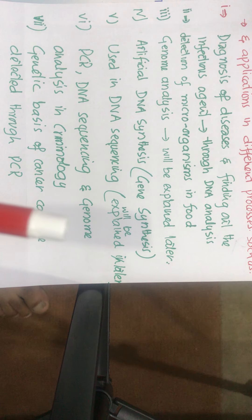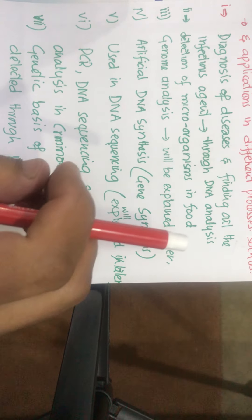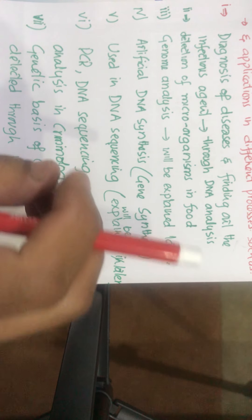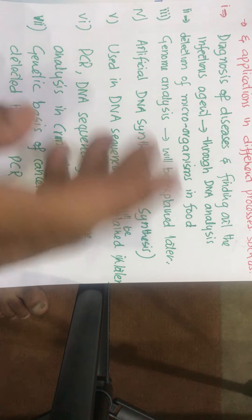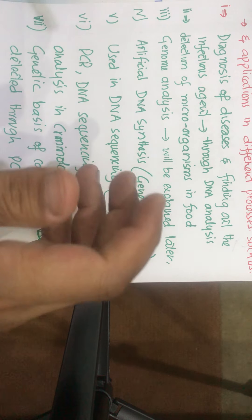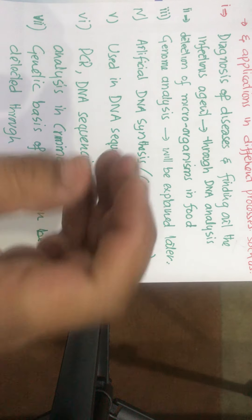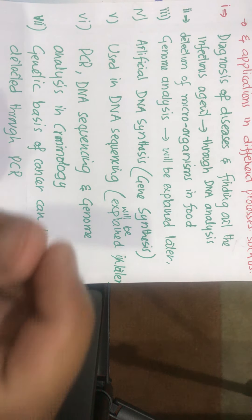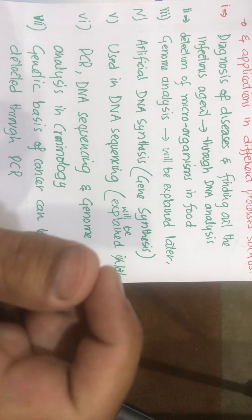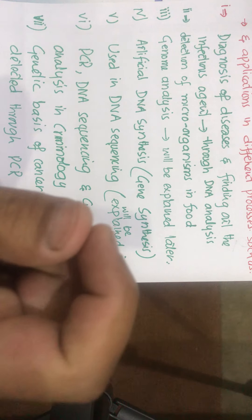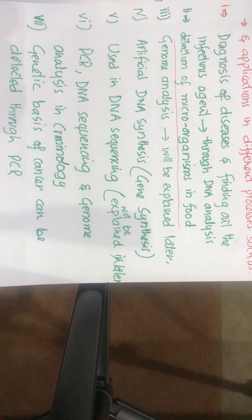Some time ago in Europe, there was a major issue about what type of meat was being used in various food products. Many people claimed it was horse meat mixed with normal meat. They detected this by taking primers specific to horse DNA and other animals' DNA. Where the horse primers caused DNA amplification, it confirmed there was horse meat in those food products — so you can detect it through PCR using species-specific primers.